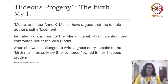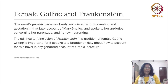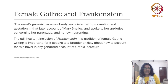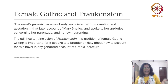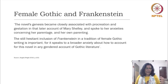This novel's origin became closely associated with procreation, the idea of giving birth and gestation in that later account of Mary Shelley, and it spoke to her anxieties concerning parentage and her own parenting. She lost a child and was estranged from her own father, and her mother died when she was born. So there is a kind of an obsession with this idea of parenting and parentage in Frankenstein. Frankenstein rejects his own child — the creature that he produced — and refuses to be a good father, a guide to the child that he created. That idea of parenting is symbolically discussed in the novel.